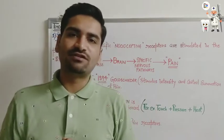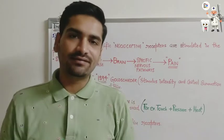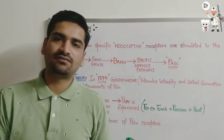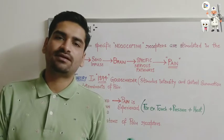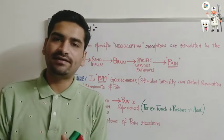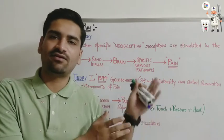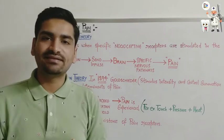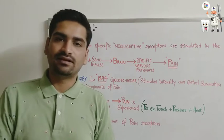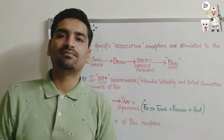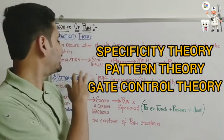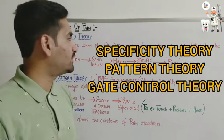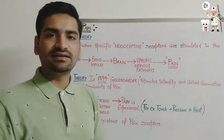Hi everyone, welcome to our channel Dentistry to the Point. This is Dr. Dromil Manik. In our previous video we discussed about the pathway of pain, how the pain pathway or how the sensations are mediated through the first order, second order, and the third order neurons. Next we'll discuss about the various theories of pain. There are three theories of pain which are considered to be important: the specificity theory, pattern theory, and the gate control theory.